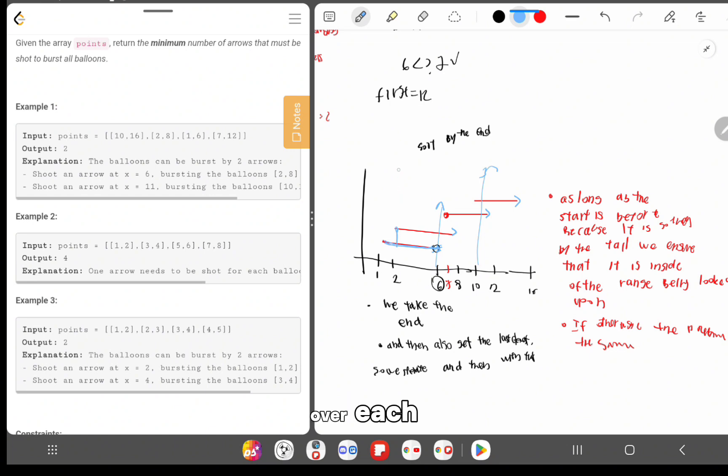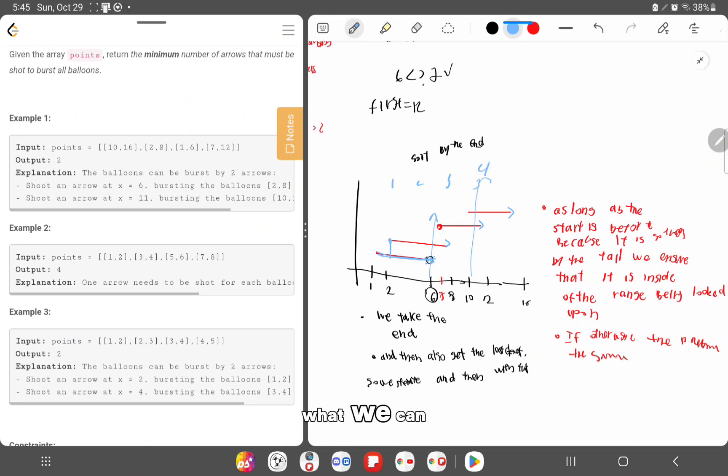If we iterate over each balloon, what we can do is that knowing the end range and knowing the start range of the current iteration, we always know if this is, because this is sorted by end, we know that this must be inside of this.